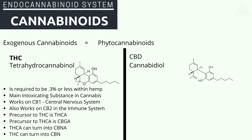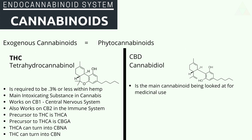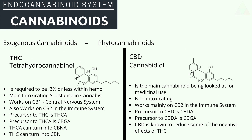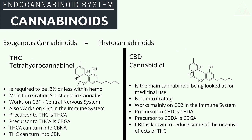Then we have CBD, or cannabidiol. It is the main cannabinoid being looked at in medicinal testing. It is non-intoxicating and works mainly on the CB2 receptors within the immune system. The precursor to CBD is CBDA, and the precursor to CBDA is CBGA. CBD is also known to reduce some of the negative effects of THC.